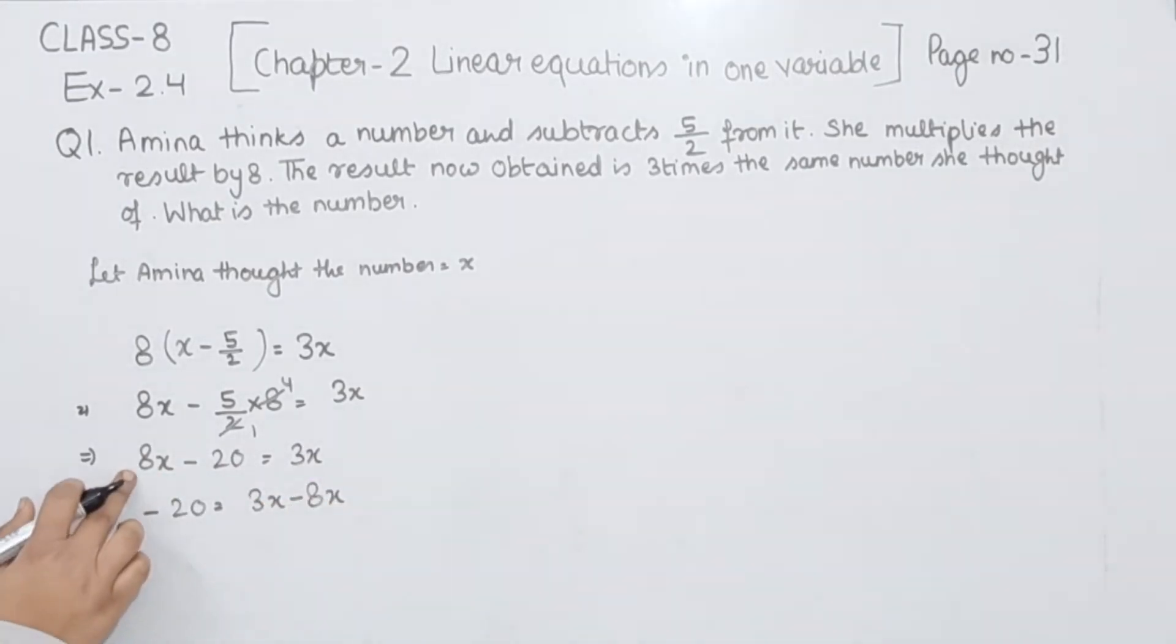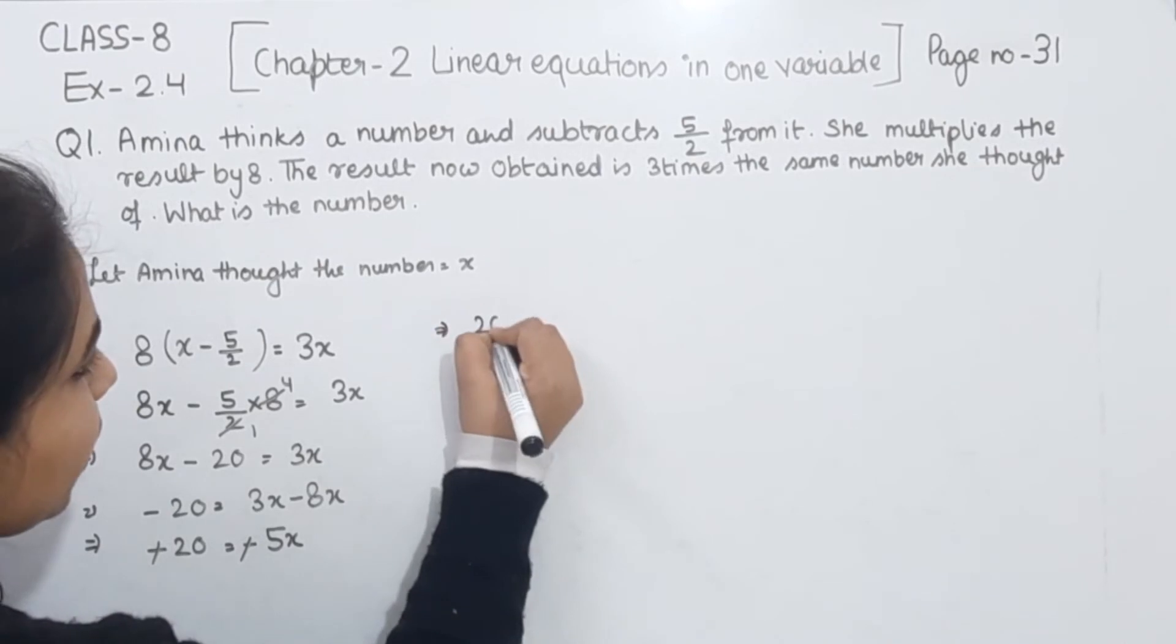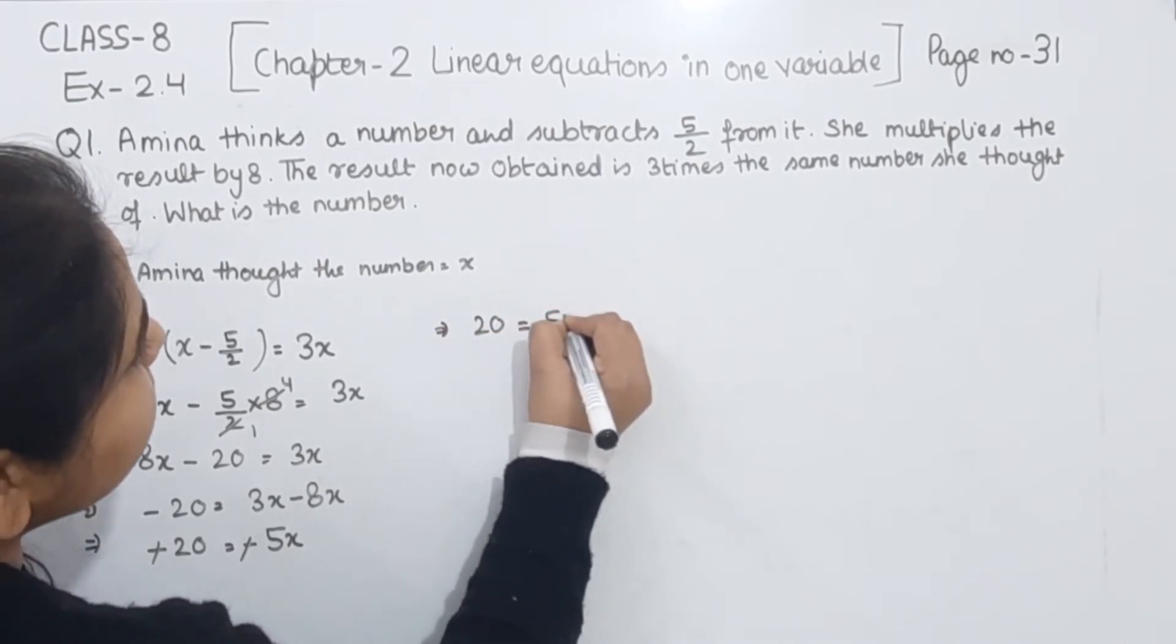Now minus 20 equals 3x minus 8x. We will transpose this 8x from the left hand side to the right hand side. Minus 20 equals 3x minus 8x, which gives us negative 5x. Now minus is cancelled from minus, so we have 20 = 5x.